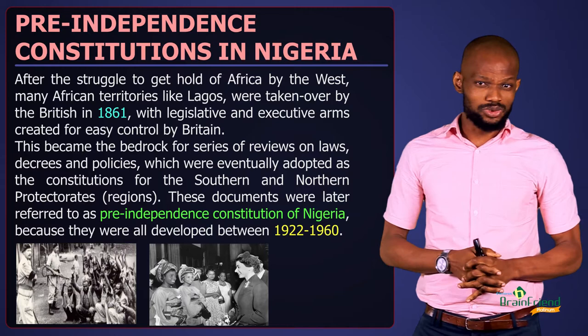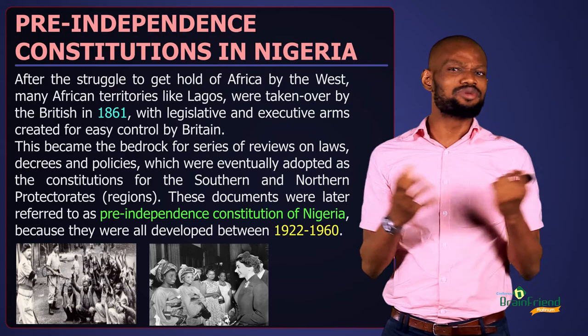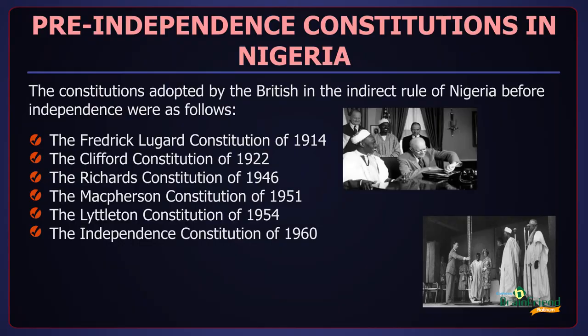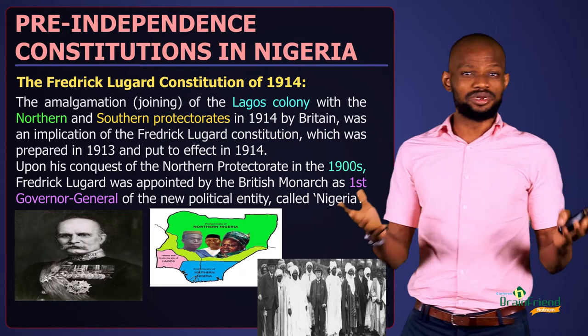One thing to get straight is that these constitutions were not put in place so that the peoples of Nigeria would be able to harness their resources and come to nationhood. These constitutions, enacted by the British to help them administer an indirect rule in Nigeria successfully, are the 1914 Frederick Lugard Constitution, the 1922 Clifford Constitution, and a few others. We shall look at their features, problems, and why they were eventually replaced.